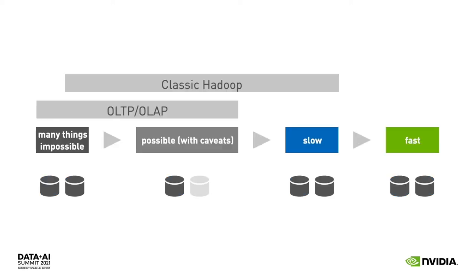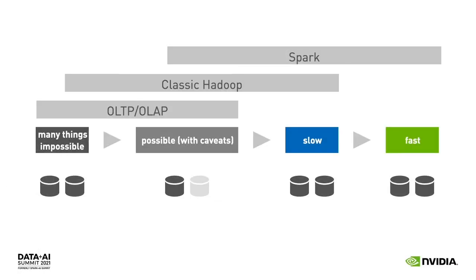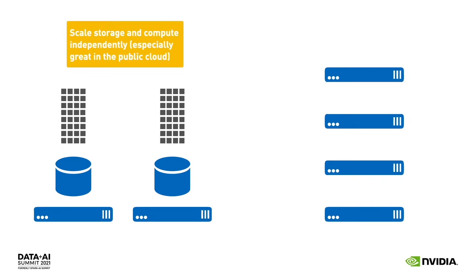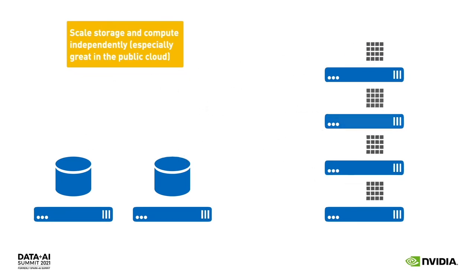The downside of Hadoop is that analytic processing was slow and we can't independently scale compute and storage. These eras of analytics roughly correspond to windows over our hierarchy of data processing systems. In the transaction processing and analytic processing era, many things were impossible or possible merely with caveats. With the Hadoop era, we were able to solve more problems at scale, but things weren't as fast as we'd like. With Spark, we shift the window more to the right, solving difficult problems and many problems quickly, and we can scale storage and compute independently because jobs cache data in worker memory.